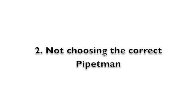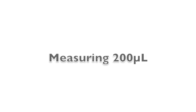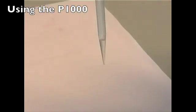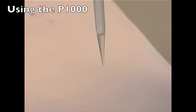Not choosing the correct pipette is an easy error to make when you first start to use pipettes. Using the example of 200 microliters again, using the P1000 to measure this amount is incorrect. Essentially, the pipette tip should be as full as possible, as this will reduce the chance of error.